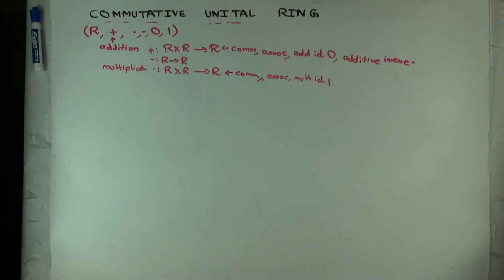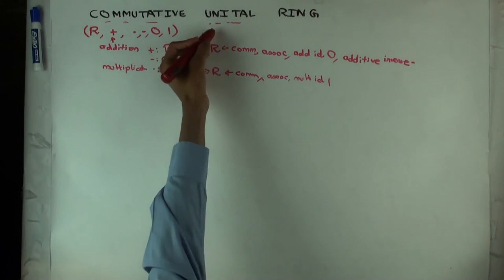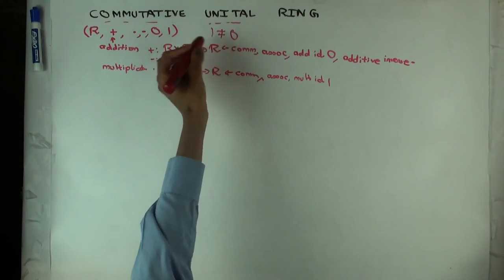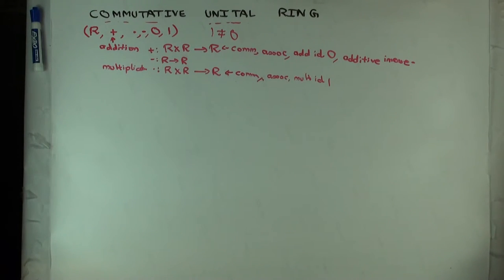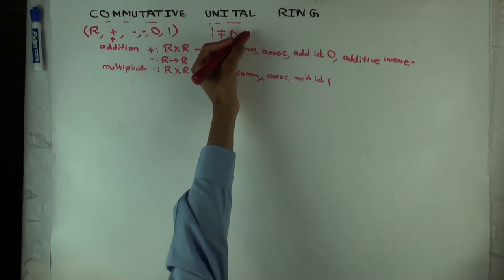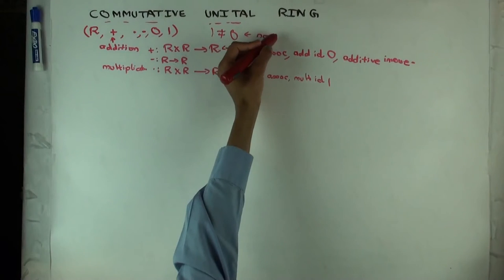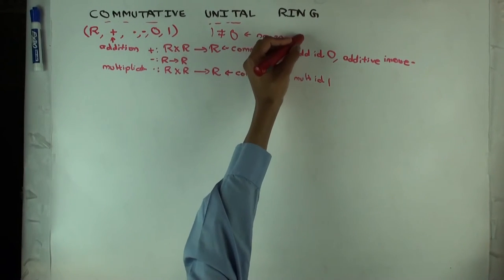For non-trivial rings, one is not equal to zero. So if one were actually equal to zero, then your ring would actually be a one-point ring, just a single element ring, which is not very interesting for non-trivial rings. Non-zero rings. We'll talk about this in a while.